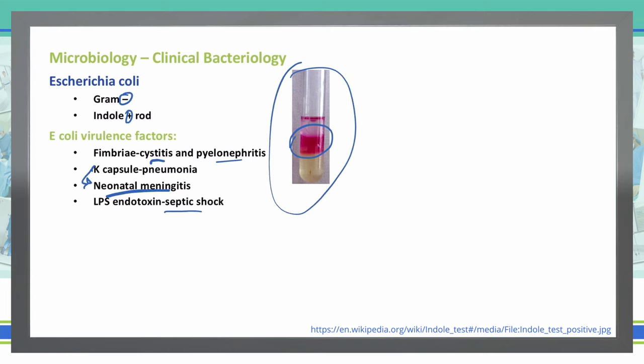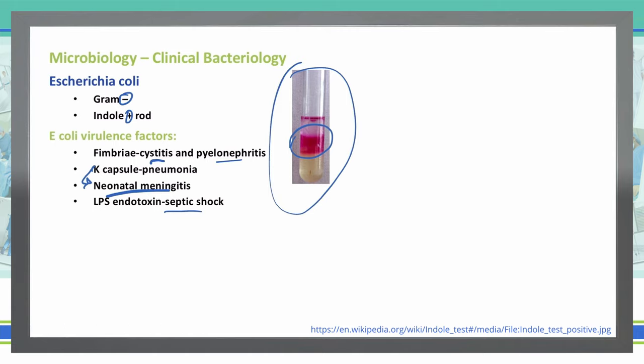A particular thing about E. coli that makes it very virulent is it does rapidly reproduce itself. One cell divides to two, then those two will divide and become four, the four will divide and become eight, the eight divide and become 16, and so forth. You can see how quickly, over about a five-hour period, this E. coli has gone from one individual bacteria into a huge amount of bacteria.